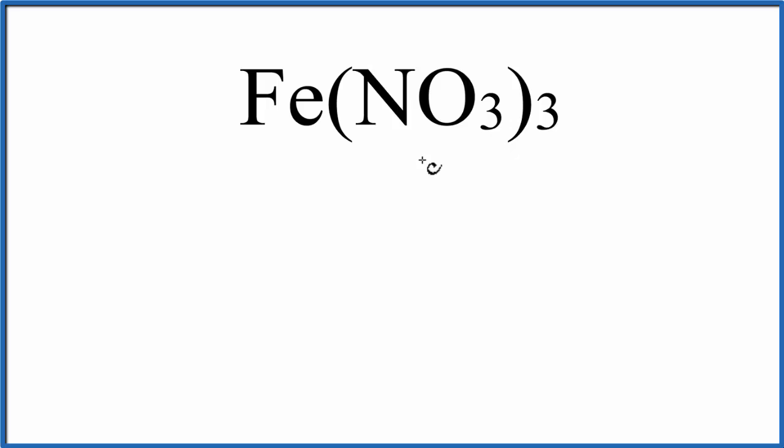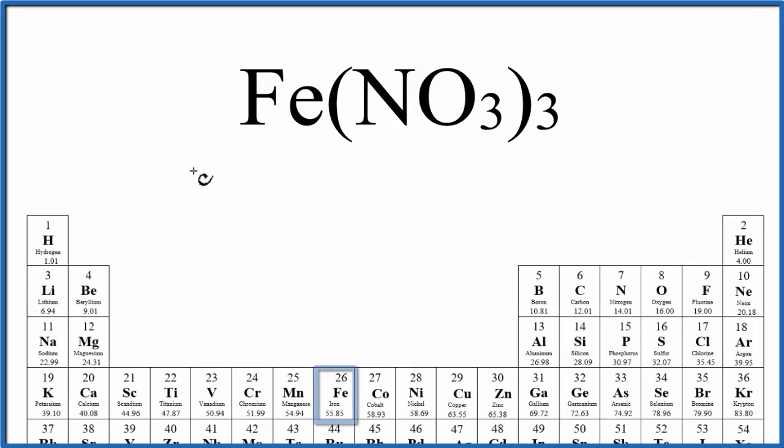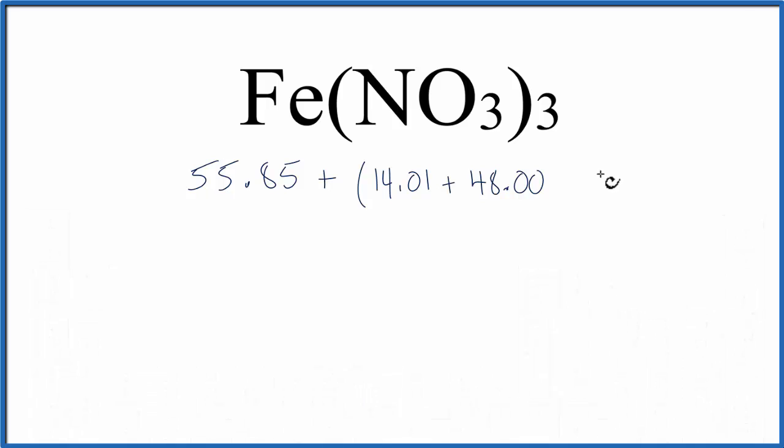So let's try this. We'll just write it out like the equation. We have 55.85 grams per mole, that's the molar mass for the iron, plus, let's put parentheses here, nitrogen, 14.01 grams per mole, plus the oxygen, we have three times 16.00, that's 48.00 grams per mole, and then we'll multiply everything by three.